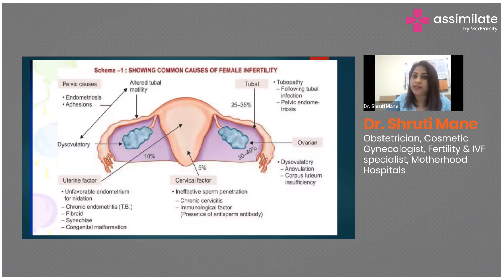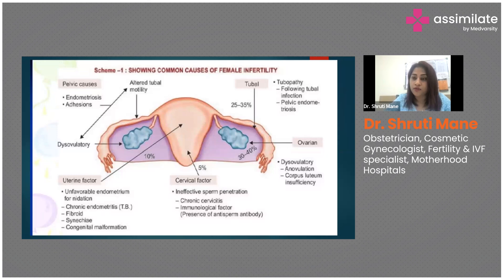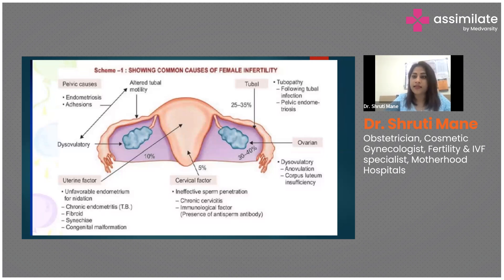Fibroids at the fundal level, submucosal fibroids, or cornual fibroids can block the tubes at the ostia, causing combined uterine and tubal factor infertility. Intrauterine adhesions, also known as Asherman's syndrome — often from repeated D&C procedures — are another cause. Congenital malformations such as unicornuate uterus, complete or partial septate uterus, or bicornuate uterus also contribute to infertility.